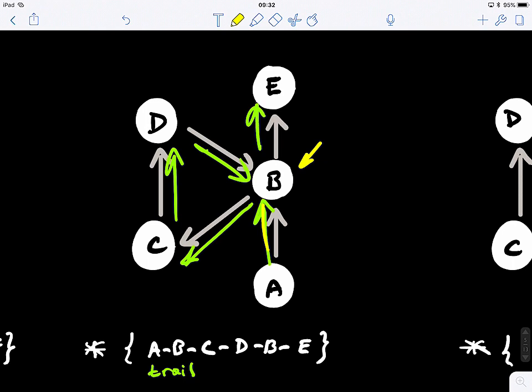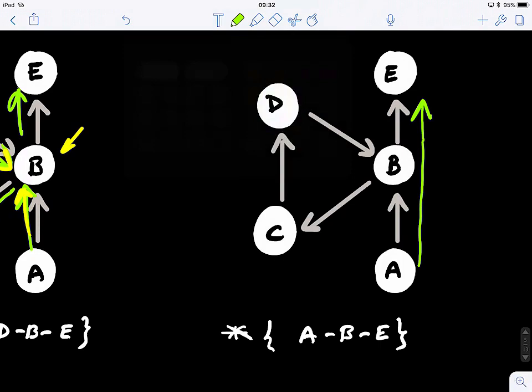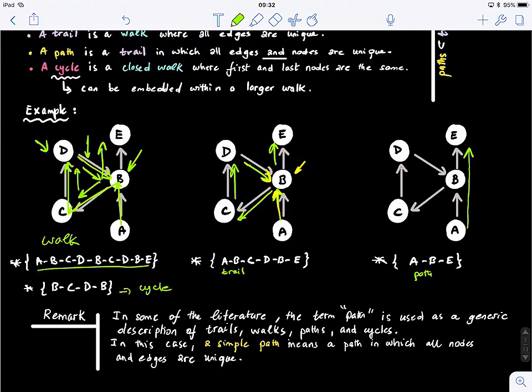Okay, now what about the last one? It's quite easy. So this is actually a path. Each is visited only once. Now, an important remark to keep in mind, because you might look at different textbooks. In some of the literature, the term path is used to also describe trails, walks, and sometimes cycles. In those textbooks they usually call what we call path as simple path. So simple path means it's a path in which all nodes and edges are visited only once. But in this course, when we say path it means a simple path.